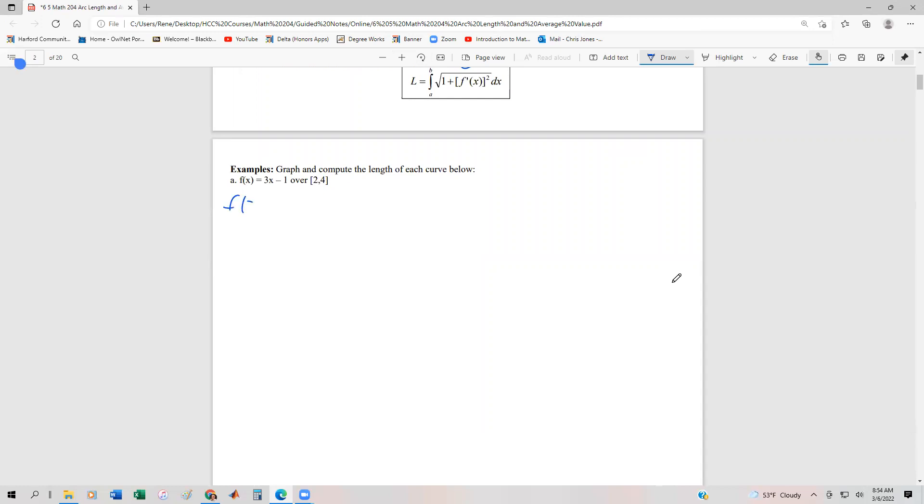So f at 2 is going to be 5, and then f at 4 is going to be 11. And I just substituted those back in for x. So this would be equal to our y1, and this would be our y2, and x1 would be our 2, and then x2 would be our 4. And so we can use the distance formula. And again, this is just doing it without calculus because it's a straight line, and then we're going to use calculus to verify the answer.